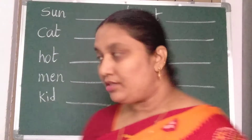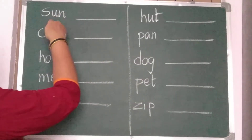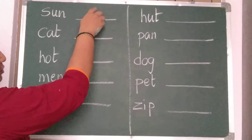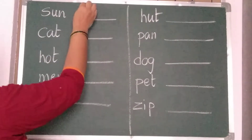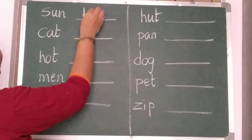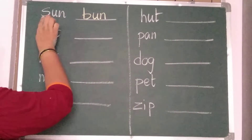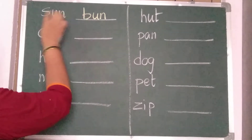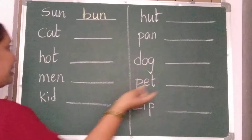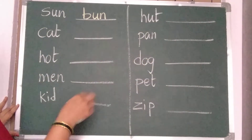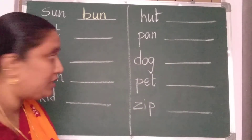See children — S, U, N — sun. So, similar U, N sound words you should write here. Sun, bun — B, U, N — bun. The only first letter you should change; you write another word that becomes a new word.